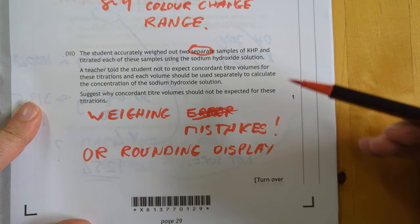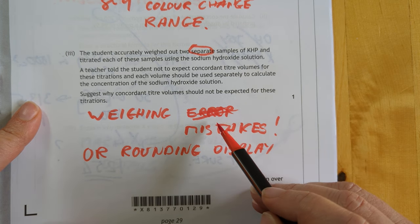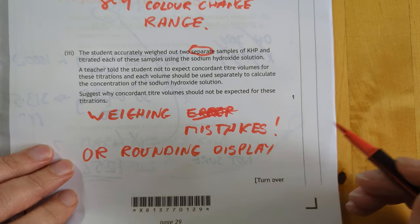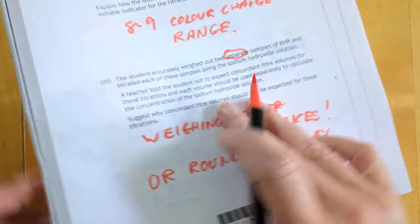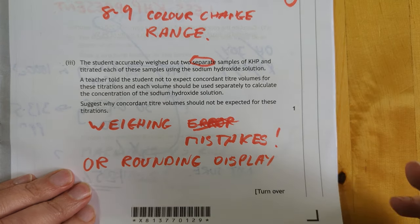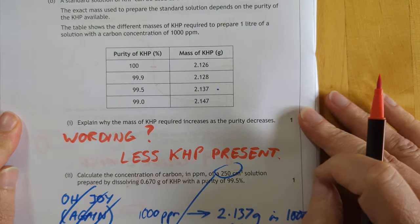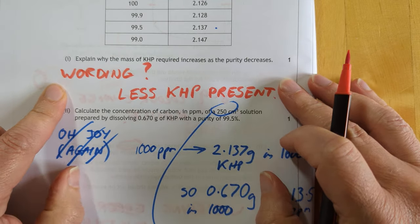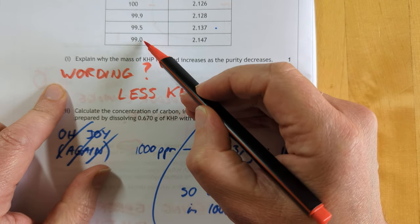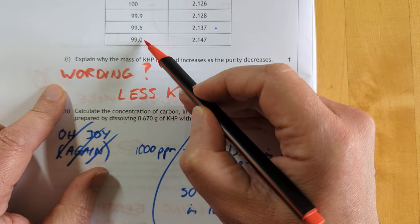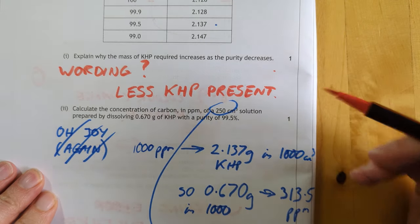This is an interesting one. Why would you not get concordancy? Well I couldn't spell errors ironically. I kept making a mistake with the word error. So weighing errors or rounding on the display of the scales. If you weigh out 0.306 it could be 0.3062 or it could be 0.3064 and they'll both show us the same on the scales. But they're not the same mass. Obviously I'm going to give you slightly different volumes. Explain why the mass of KHP required increases as the purity decreases. I don't know how to put this in words. Obviously as the purity of your KHP is dropping, you'll require more of the stuff on the scales to compensate for the increased impurities. If you see what I mean, I think that was really badly explained. And I'd love to see the official wording on this one.